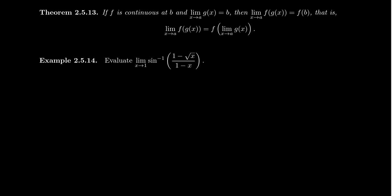Let me show you how one can use that principle. Take the limit as x approaches one of sine inverse of one minus the square root of x, over one minus x. Now you might be tempted just to plug in one here, in which case you're going to end up with sine inverse of zero over zero.